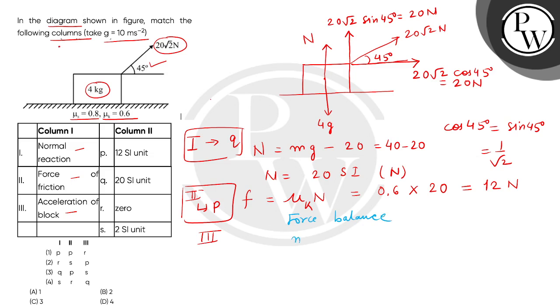We get mA equals 20 square root 2 cos 45, which is 20 minus mu k N. Because the force of friction is in the opposite direction, we get 20 minus 12 divided by mass 4, so acceleration equals 2 meters per second squared.